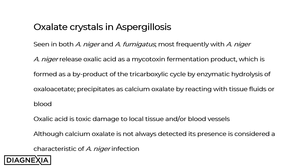This then precipitates as calcium oxalate within the tissues by reacting with tissue fluids and/or blood. The oxalic acid itself is toxic and causes damage to the local tissue as well as blood vessels. Although calcium oxalate is not always detected, its presence is considered very characteristic of an Aspergillus niger infection, and it is incumbent on the pathologist to search for oxalate crystals. Many of the pulmonary oxalosis cases have had, or do have, a current infection with Aspergillus niger.